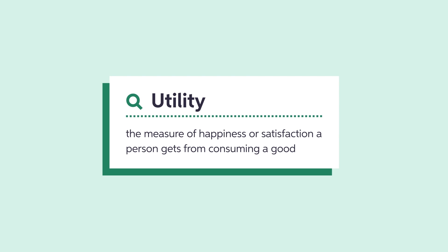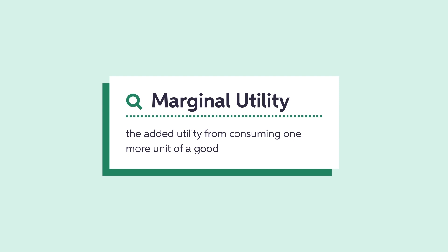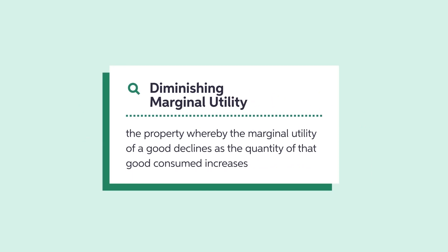First, let's talk about utility. What is utility? It's the satisfaction or pleasure we get from consuming a good. Consumers receive more utility by consuming more of a good, at least up to a point. The additional utility from consuming one more unit of a good is referred to as marginal utility. However, each additional unit that we consume tends to not have as much utility as the unit consumed before it. This characteristic of consumption is called diminishing marginal utility.